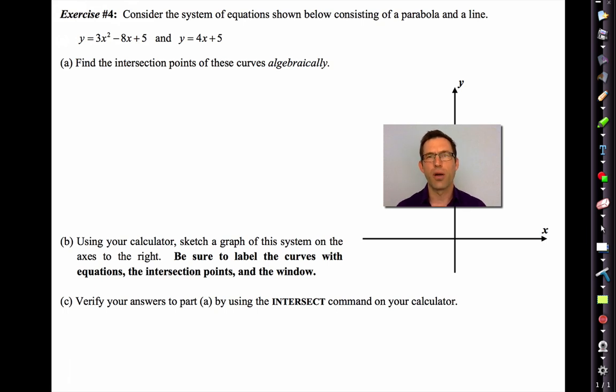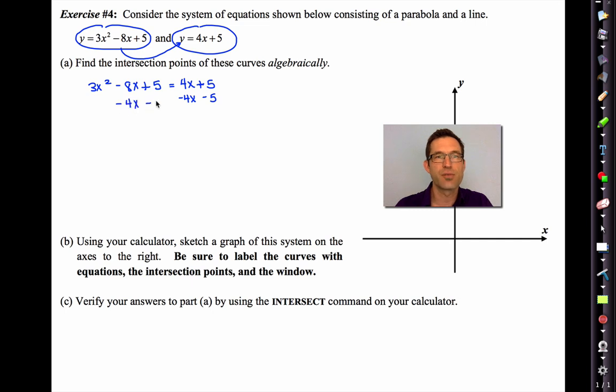One of the places that we use, tend to use the zero product law a lot, and one place that you used it in common core geometry, was solving a linear quadratic system. In other words, a system that consists of a parabola and a line. And letter A says, find the intersection points of these curves algebraically. Well, see if you remember how to do this. Pause the video. Remember you're doing this algebraically. We'll use the graphing calculator in a moment.